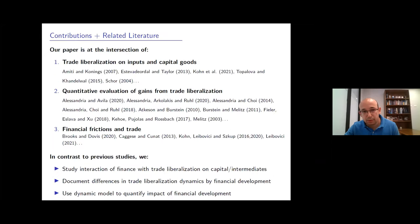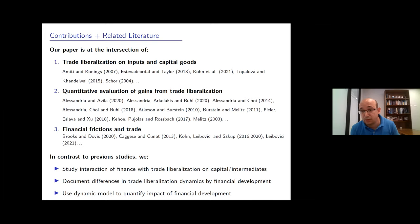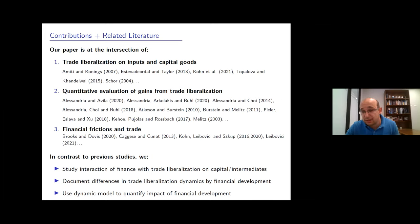This work sits at the intersection of three strands of literature. First, the effect of trade liberalization on input and capital goods tariffs — mostly empirical but with some quantitative papers. Second, quantitative evaluation of gains from trade liberalization with heterogeneous agent models. Third, and closest to us, financial frictions and trade liberalization, including a paper that also looks at Colombian trade liberalization. In contrast to these studies, we focus specifically on the interaction of finance with liberalization of capital and intermediate goods tariffs.